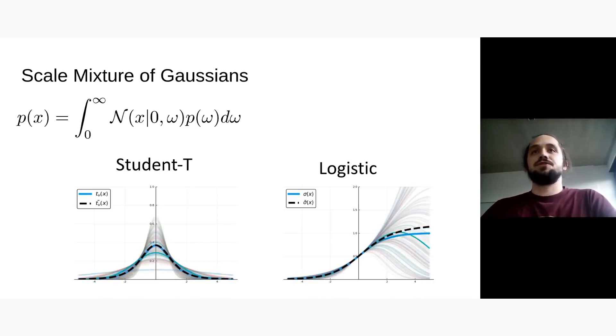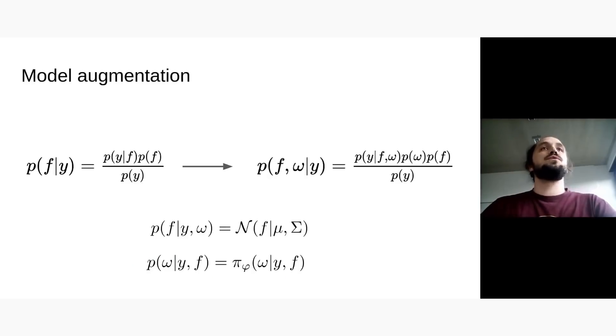So for example, Student-t or logistic. And now we can use this property to augment our model, hence the augmented Gaussian process. So we add omega to our model. And by adding omega, we are able to get what we call full conditionals.